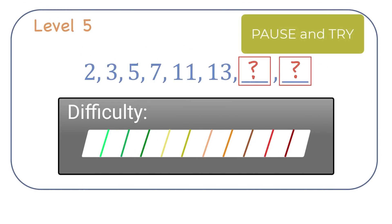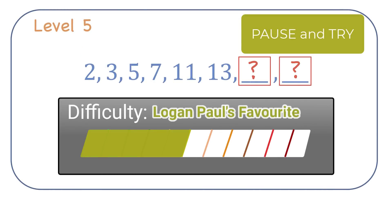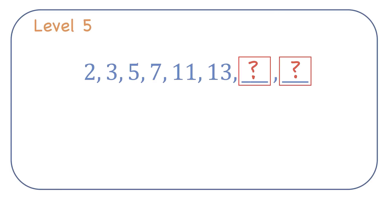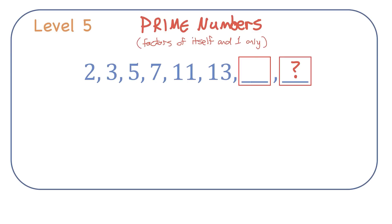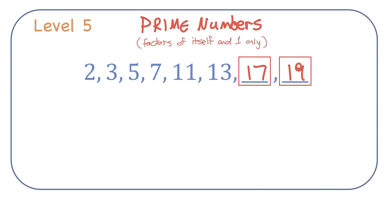Level 5. This sequence of numbers — if you try to look for a common difference, a common ratio, or any pattern, you're probably going to have difficulty. Looking at the differences: add 1, add 2, add 2 again, then add 4, then add 2 — doesn't seem to be working. That's because this set of numbers is actually just the set of prime numbers. Prime numbers are numbers whose factors are only 1 and itself. After 13 the next prime number is 17, and after 17 the next prime number is 19.